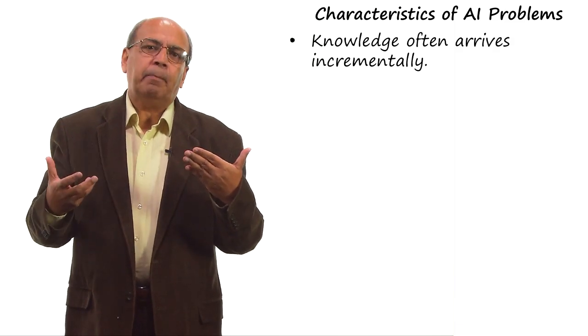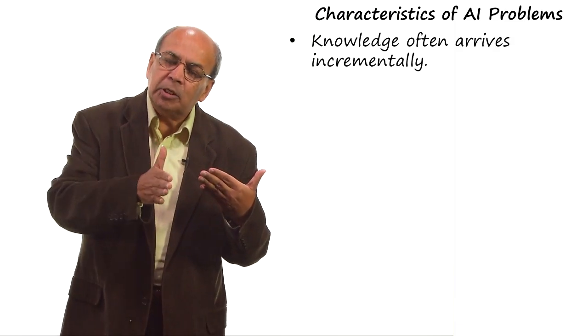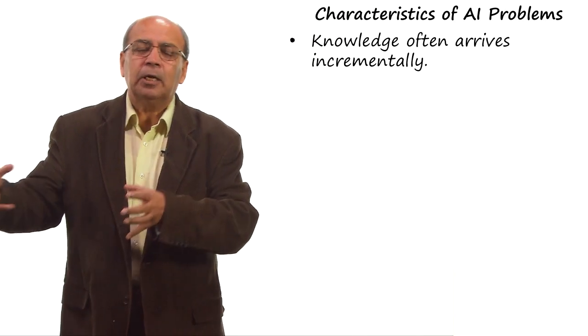Number one, in many AI problems, data arrives incrementally. Not all the data comes right at the beginning.